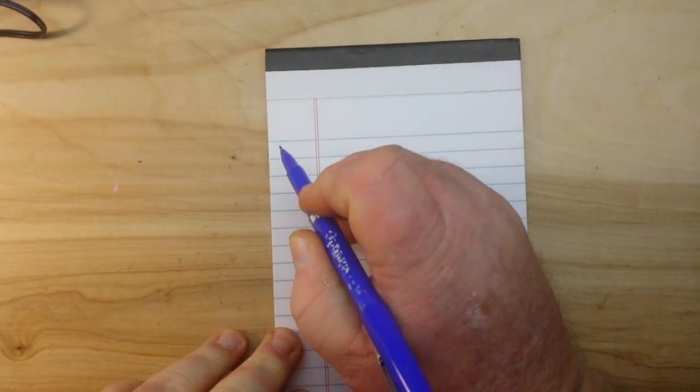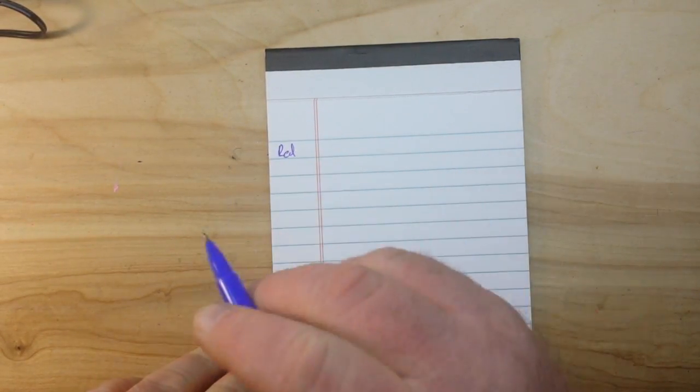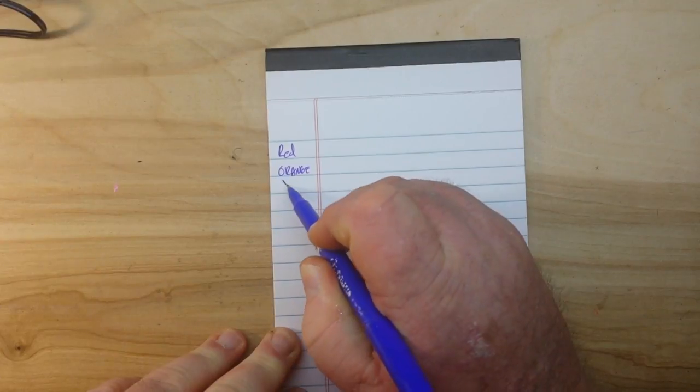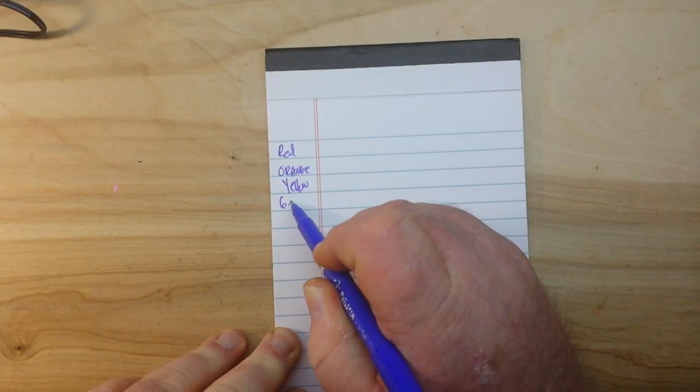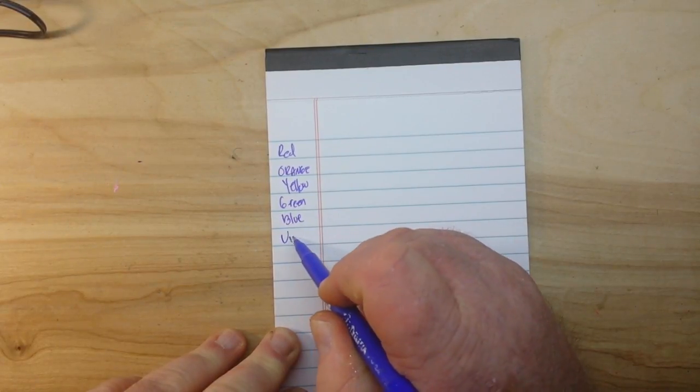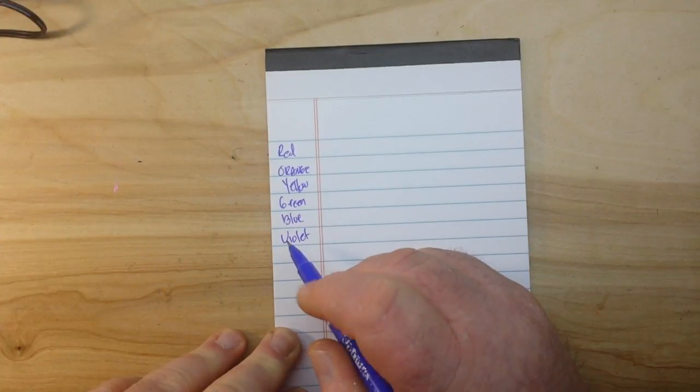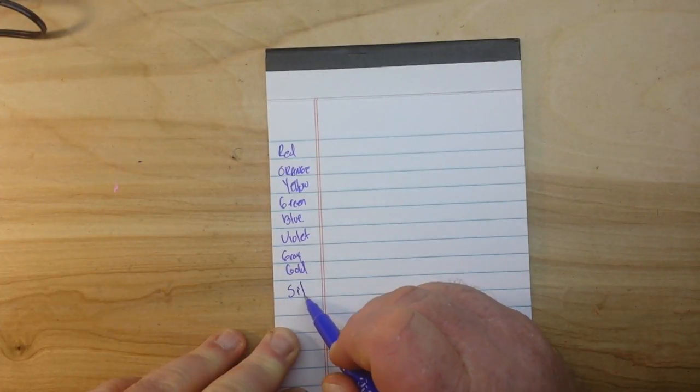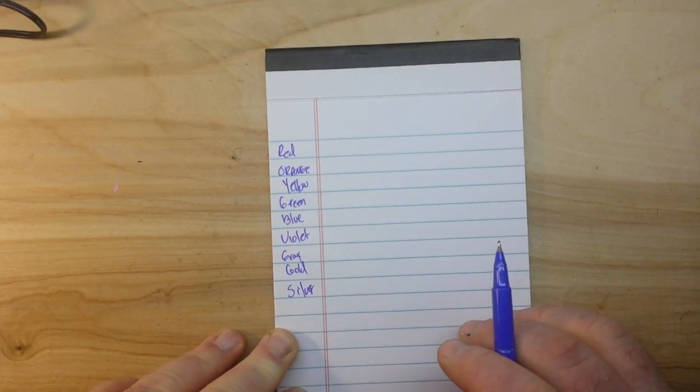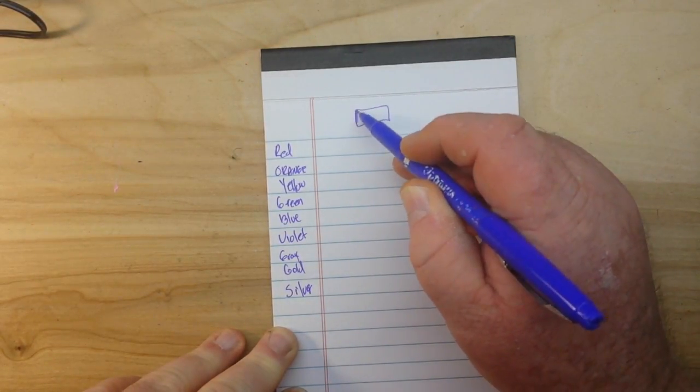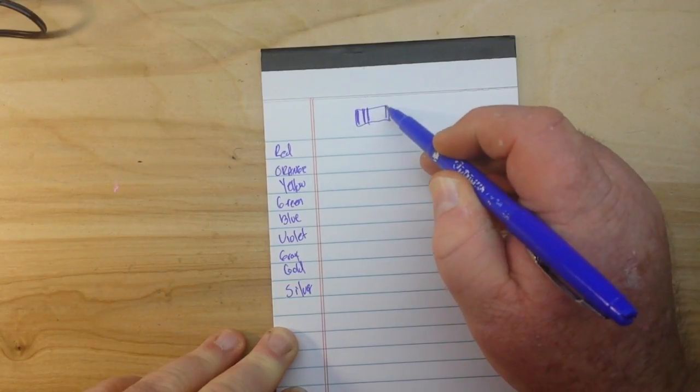All right, the last thing we need to talk about are the tolerances. And again, we do our color codes. Some of these you may have never seen. So on a three band resistor, that last band that's kind of away from the others, if your resistor looks like this with three bands and then there's one over here, this one here, that's your tolerance band.